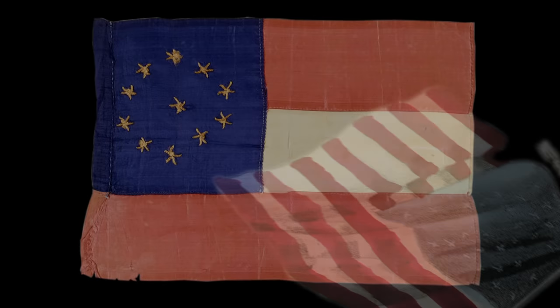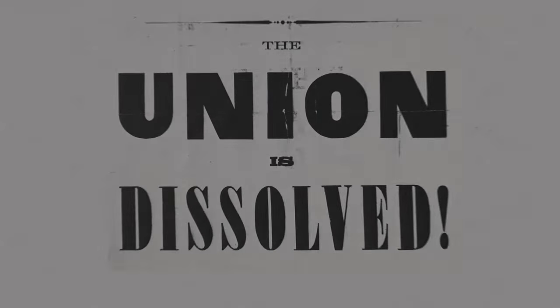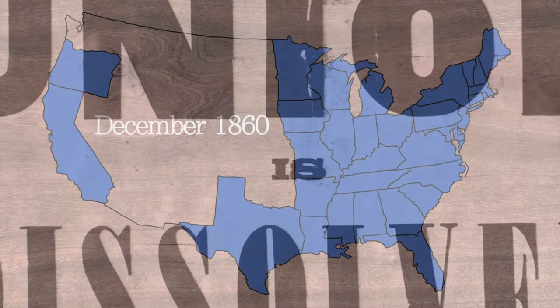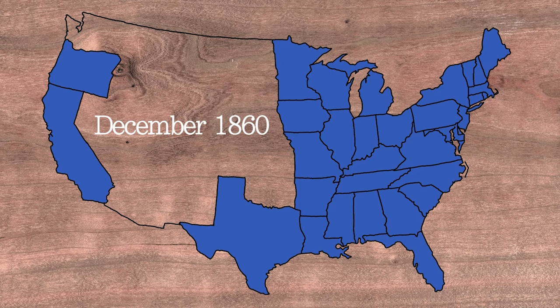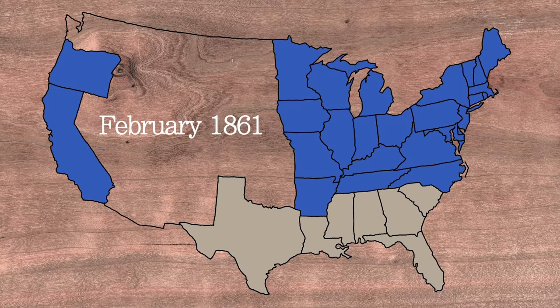They wanted to become a new country. That's exactly what happened in December 1860, when South Carolina became the first state to secede. Six other southern states followed, and in February 1861, they formed the Confederate States of America.